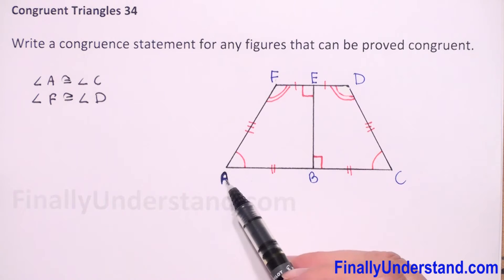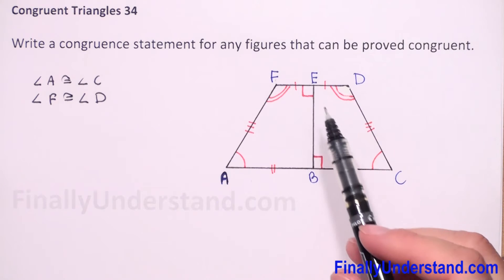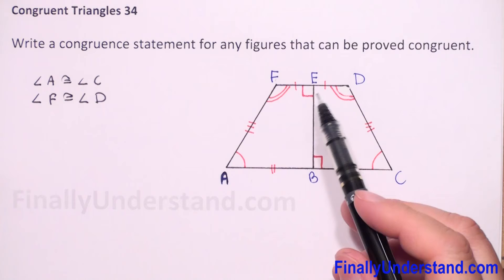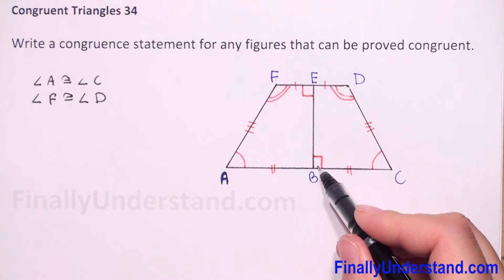Angle ABE is a right angle because angle CBE is 90 degrees.